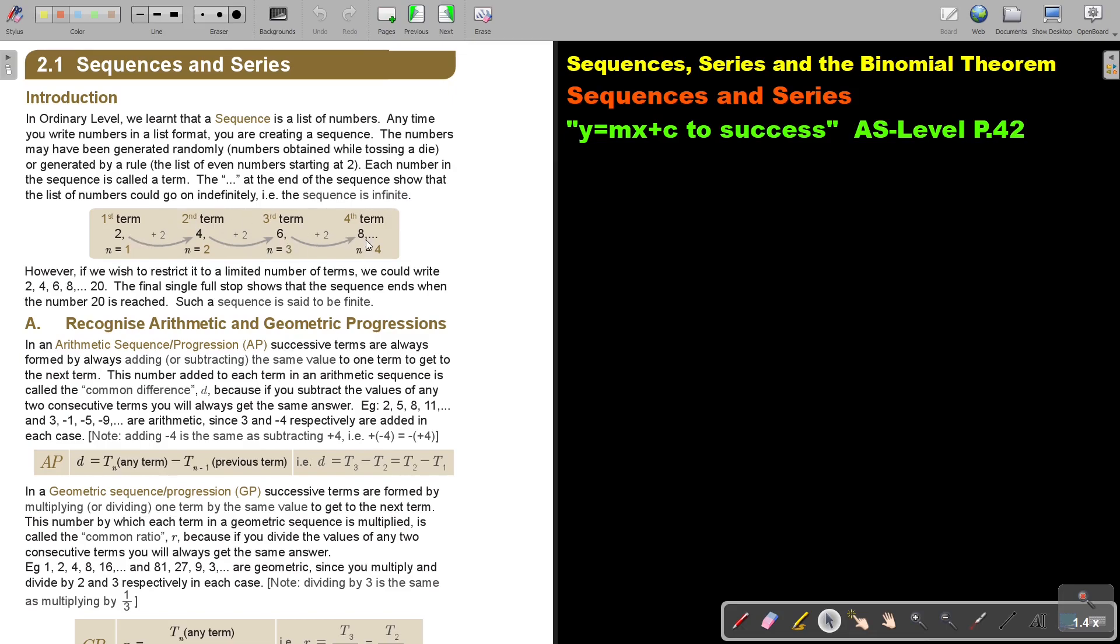The three dots at the end of the sequence show that the list of numbers could go on indefinitely. For example, the sequence is infinite: 2, 4, 6, 8 and then the three dots. However, if we wish to restrict it to a limited number of terms, we would write 2, 4, 6, 8 dot dot dot, but only up to 20. The final single full stop shows that the sequence ends when the number 20 is reached. Such a sequence is said to be finite.